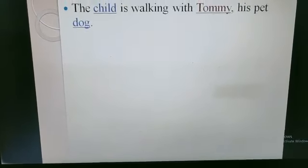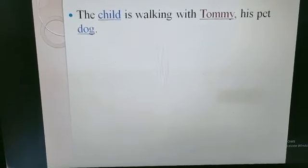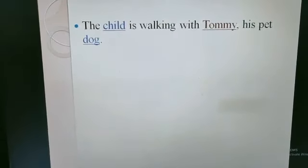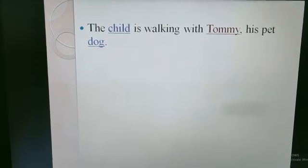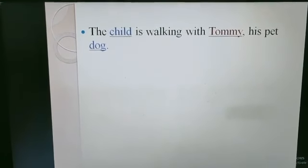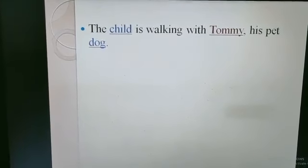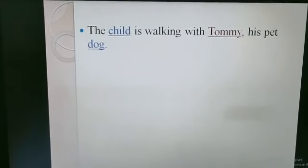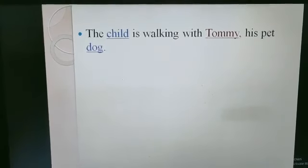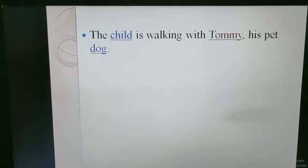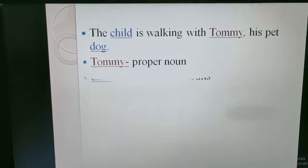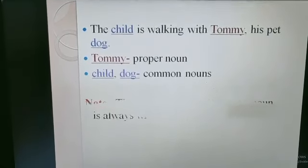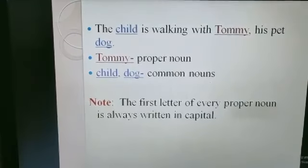We'll take up another example: 'The child is walking with Tommy, his pet dog.' In this example, we are talking about a child but the child has not been named, whereas the dog has been named — the name of the dog is Tommy. So Tommy is a proper noun, and child and dog are common nouns.